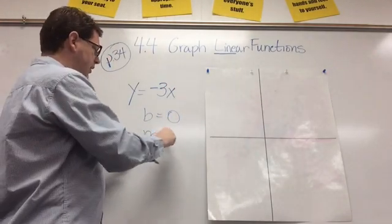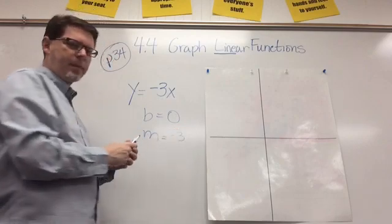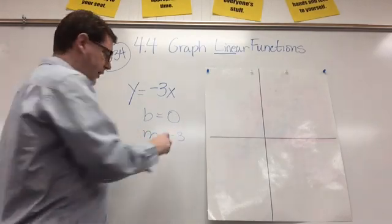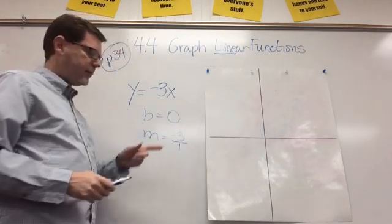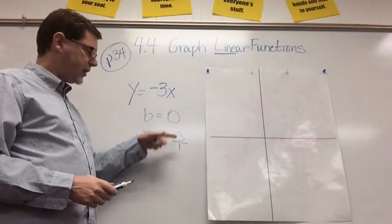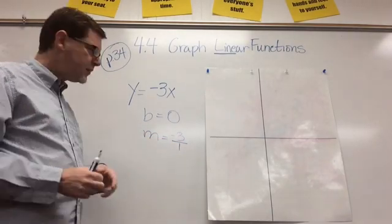And then, M is negative 3. But you know, for rise over run, we have to put it over 1 to make it negative 3 over 1. So, I have my rise and my run. So, now let's graph it.